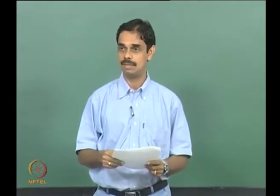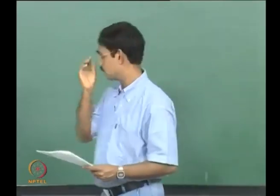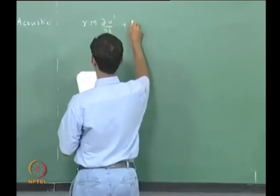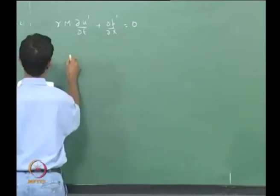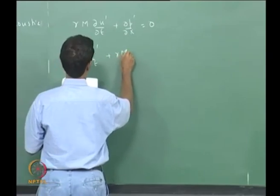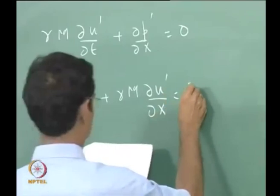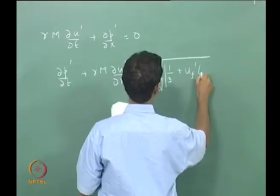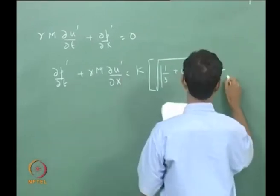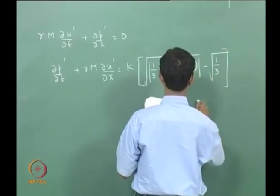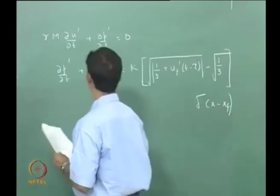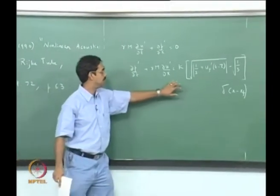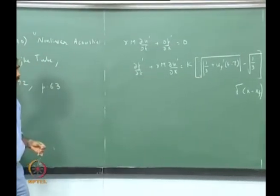Now in the last class we derived the time domain equations for acoustics. Just to summarize those equations: they were gamma_m times du'/dt plus dp'/ds equal to 0. This is the momentum equation and this is the energy equation, which we derived in the last class.